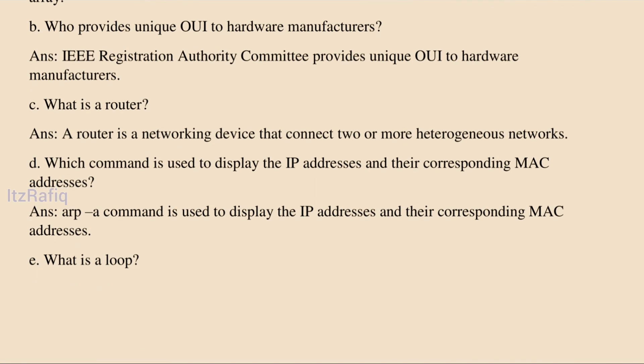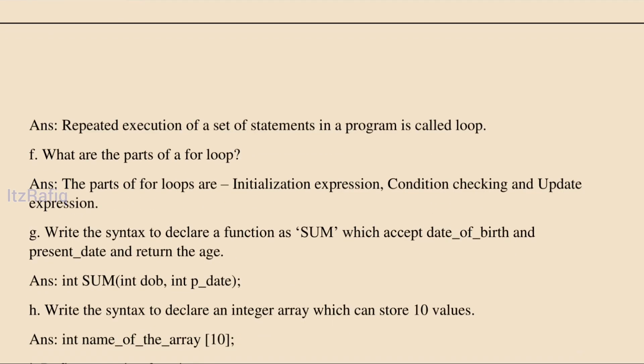Which command is used to display IP addresses and their corresponding MAC addresses? The command is arp -a. If you write ipconfig, it will display only the IP addresses. If you want MAC addresses as well, you should type arp, then one space, then -a.